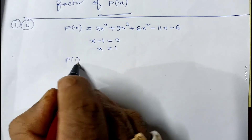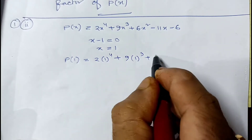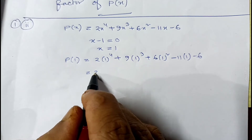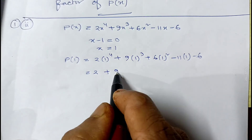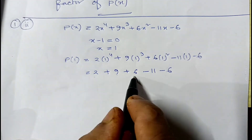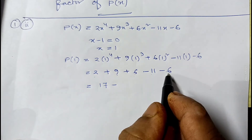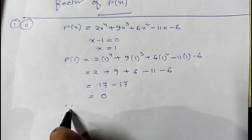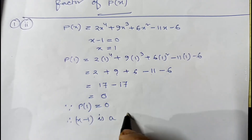Now we replace x by 1. So p(1) equals 2 times 1 to the power 4 plus 9 times 1 cubed plus 6 times 1 squared minus 11 into 1 minus 6. That gives 2 plus 9 plus 6 minus 11 minus 6. The positives add to 17, and the negatives give minus 17, so 17 minus 17 equals 0. Since p(1) equals 0, therefore x minus 1 is a factor of the given polynomial p(x).